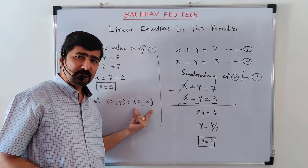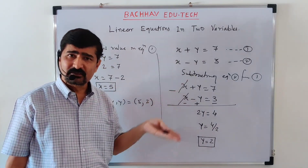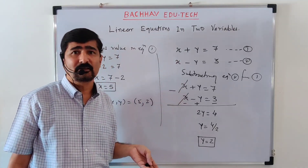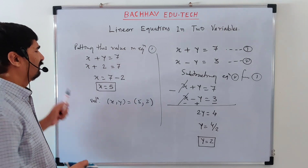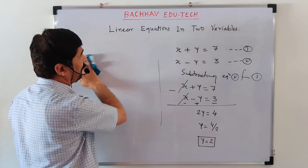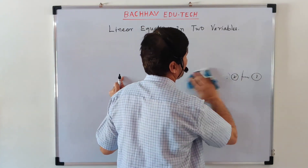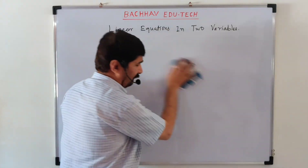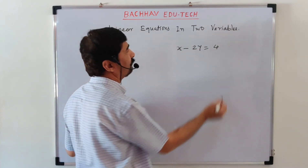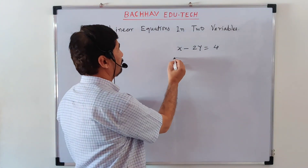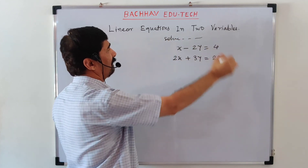Maths में solution/answer वही रहेगा चाहे method कोई भी हो — addition, subtraction, graphical method, या elimination method। और एक sum: x - 2y = 4 और 2x + 3y = 22। Solve the simultaneous equations।